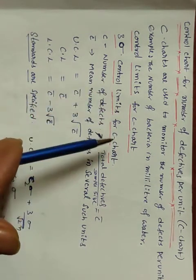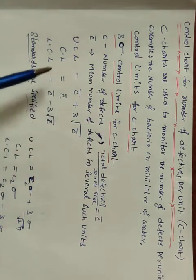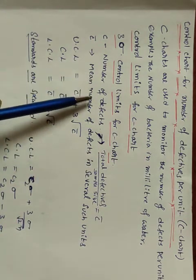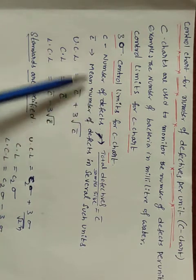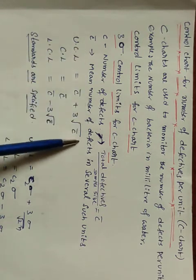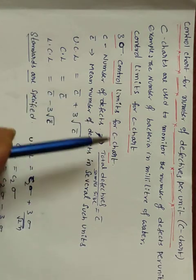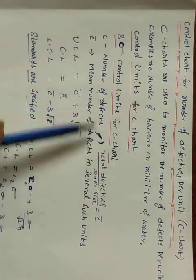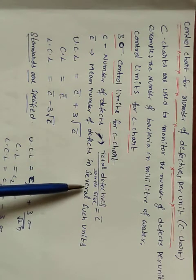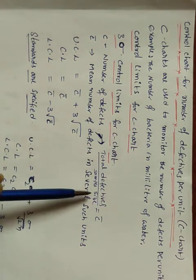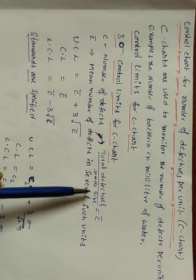We use 3-sigma limits for C chart control limits. Here, 'c' is the number of defectives, and 'c-bar' is the mean number of defectives across several such units. The mean is calculated as total defectives divided by number of samples — that is, total defectives by number of samples.